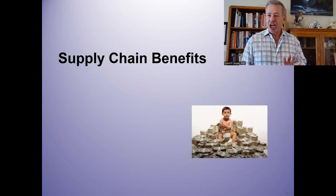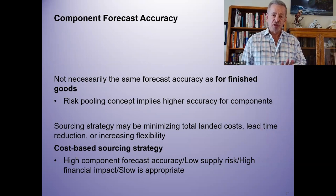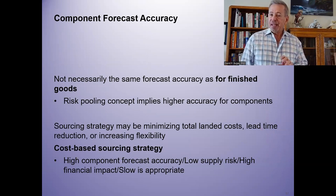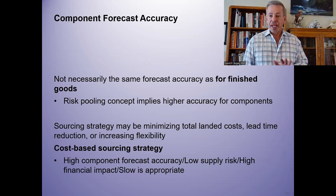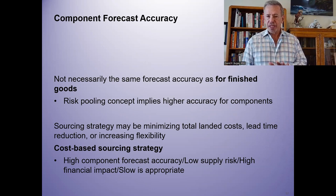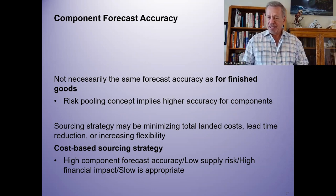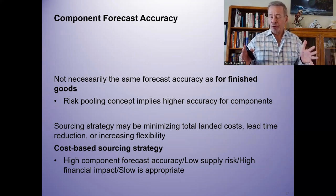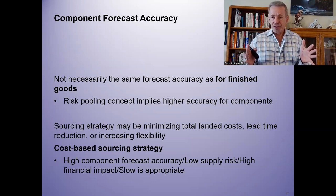Let's look at the supply chain and how we can derive some benefits from the process as we close out this chapter. On forecast accuracy — if we recall back when we talked about forecasting, the forecast is always wrong. That's always the first rule of forecasting. But that being said, it's going to depend where you're at in the supply chain.